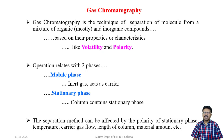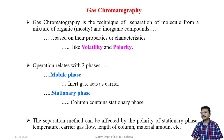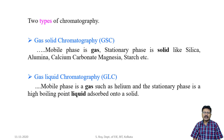The separation is based on properties or characteristics like volatility and polarity. Operation of gas chromatography is related with two phases: one is mobile phase, another one is stationary phase. The separation method can be affected by the polarity of stationary phase, temperature, carrier gas flow, length of column, and amount of material.